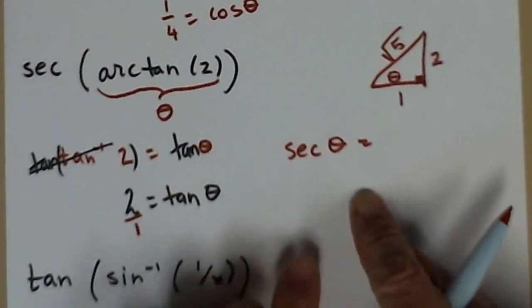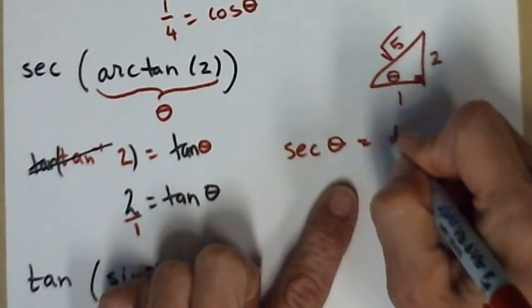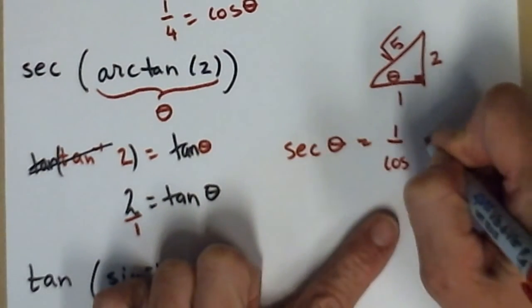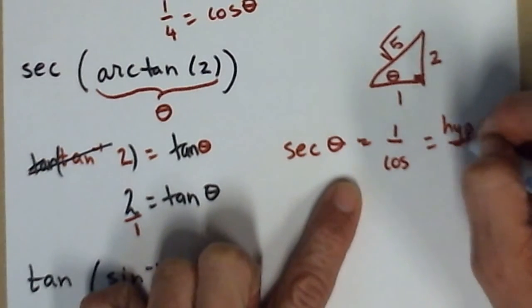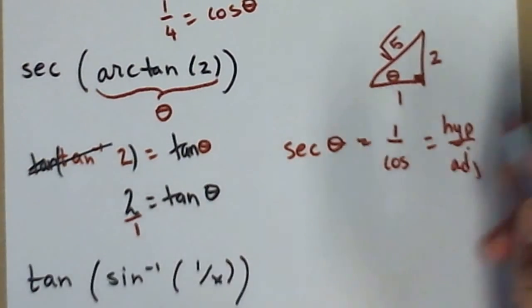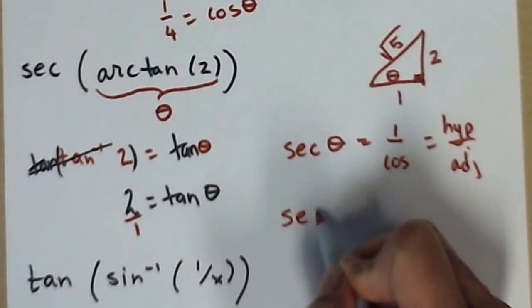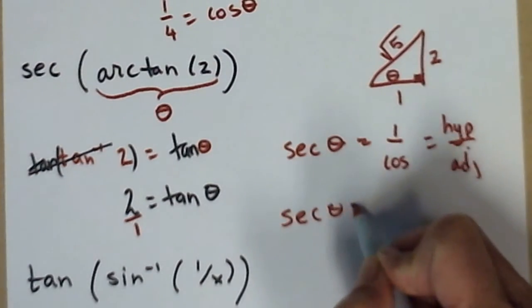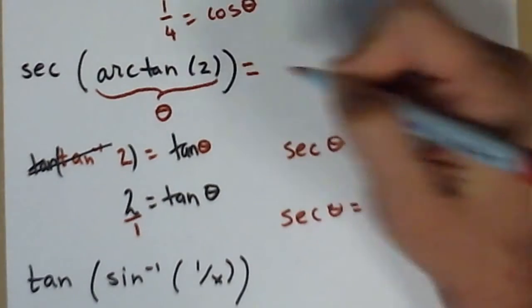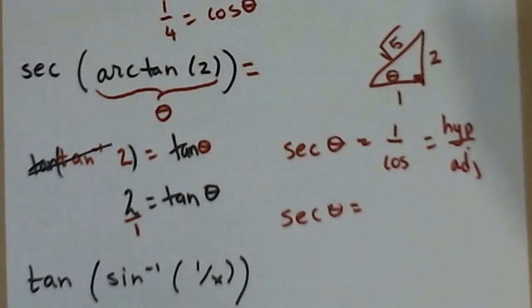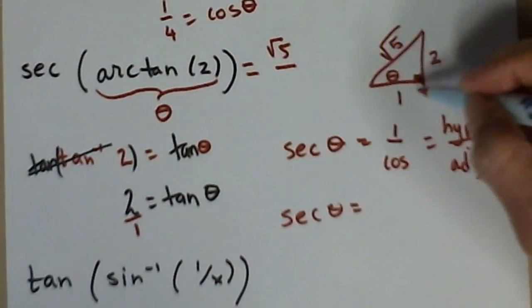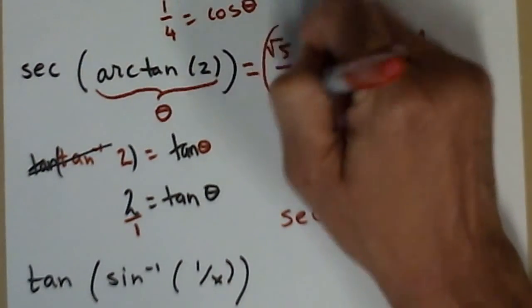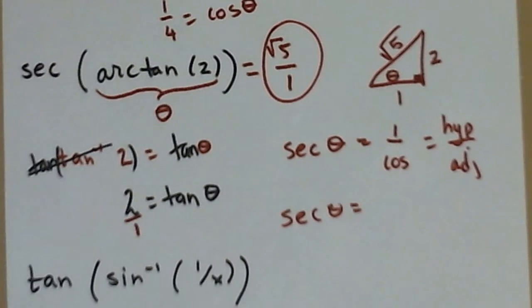The secant of theta—secant is one over cosine. So that would be, instead of adjacent over hypotenuse, it's going to be hypotenuse over adjacent. So my answer: hypotenuse root five over adjacent one.